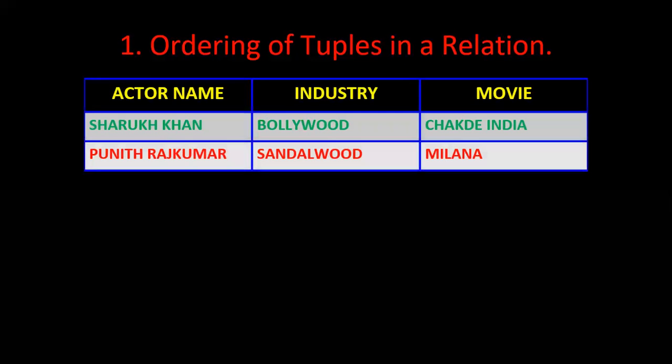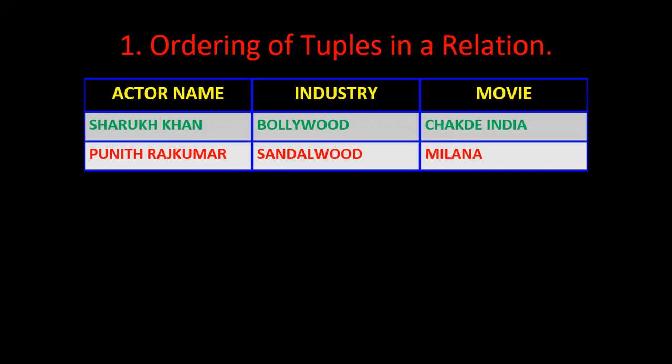We start with ordering of tuples in a relation. A relation resembles a table which contains columns and rows — columns mean attributes and each row indicates a tuple. For example, here I have a relation with three attributes: actor name, industry, and movie name. We have two tuples: the first gives details about Shah Rukh Khan who works for Bollywood and acted in Jagde India.